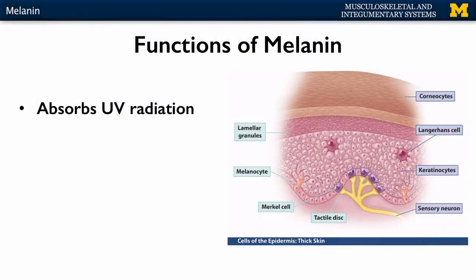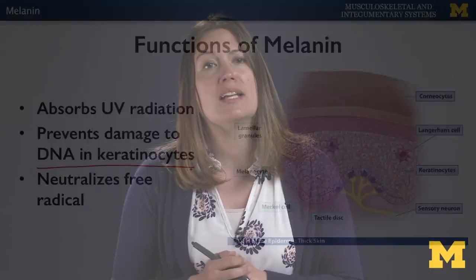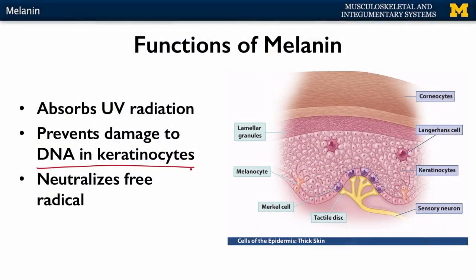It's not just skin color that melanin is affecting. Melanin is able to absorb UV radiation, and if you are exposed to UV radiation, melanin production will typically increase — that's what a tan is, the production of more melanin allowing for darker skin color. Melanocytes have those extensions that allow melanin to move into the keratinocyte region to protect the nuclei and the DNA. Melanin can also play a role in neutralizing free radicals, which can lead to cancer if not addressed.